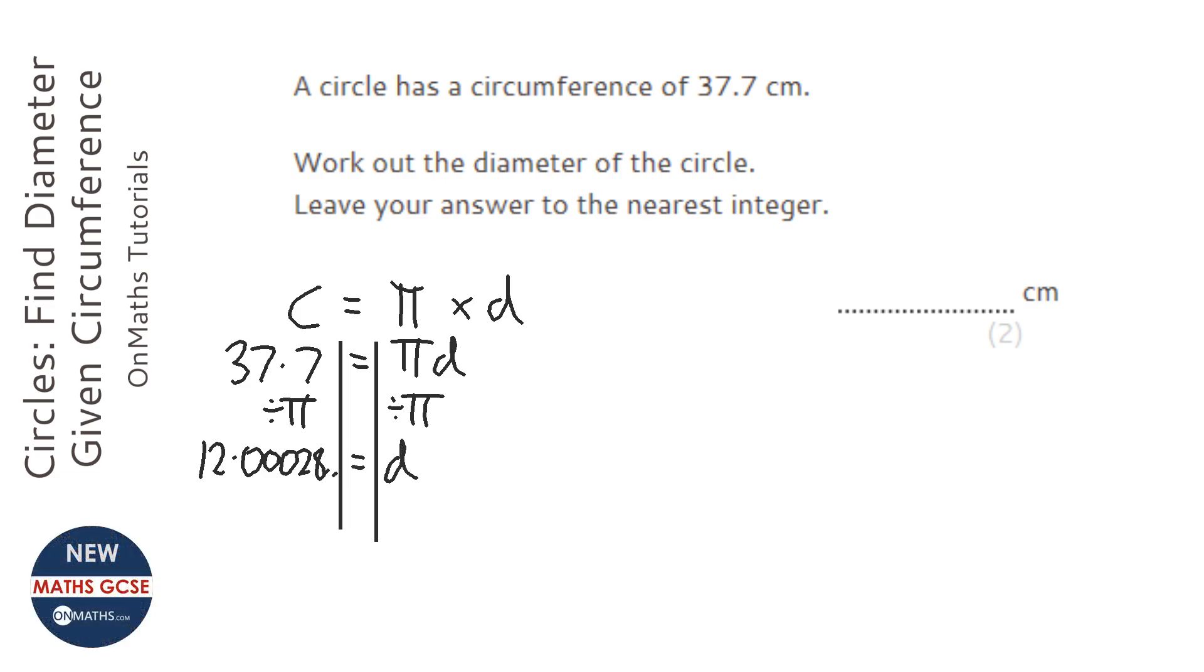And so it says it wants it to the nearest integer. Now, integer just means whole number. So to the nearest whole number, well, that's so close to 12, it pretty much is 12. So to the nearest integer, that is going to be 12.